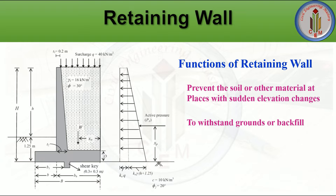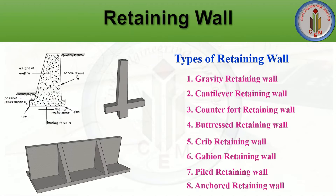The functions of retaining walls: they prevent soil or other material from moving at places with sudden elevation changes. Earth retaining structures are used to hold back the earth and maintain the difference in ground surface height. Retaining structures are also designed to withstand backfill and other externally exerted loads, and transmit these forces safely to a foundation.